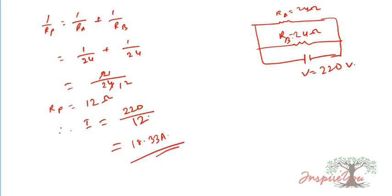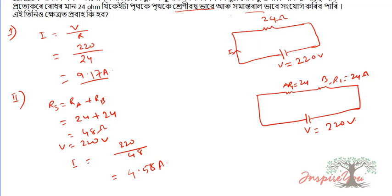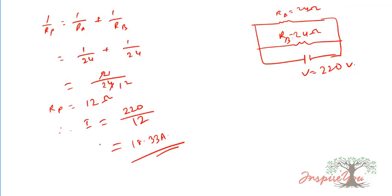So the solutions for question 13 are: Case 1 gives 9.17 ampere, Case 2 gives 4.58 ampere, and the parallel case gives 18.33 ampere. Now moving to question 14.